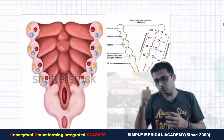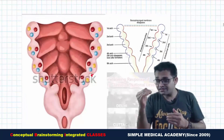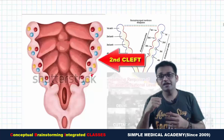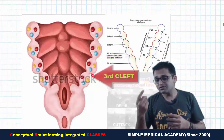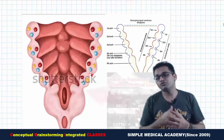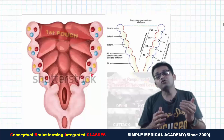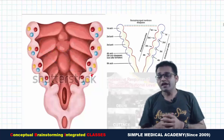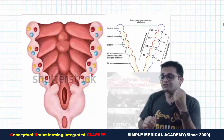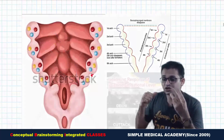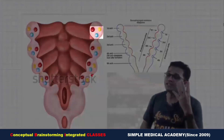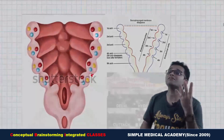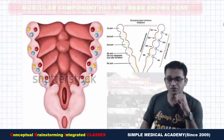Between two arches, the ectoderm dips inside forming the cleft: first cleft between arches one and two, second cleft between arches two and three, third cleft between arches three and four, and fourth cleft between arches four and six. The pouch is endodermal out-bulging between two arches — four pouches total. Within each arch, four components develop: nerve component, arterial component, muscular component, and skeletal component.